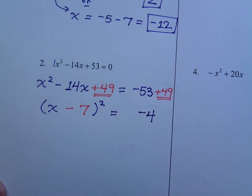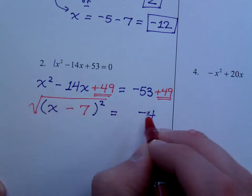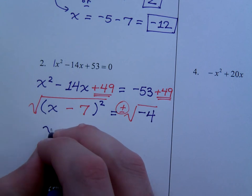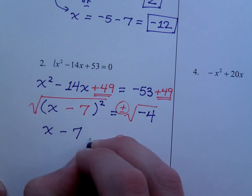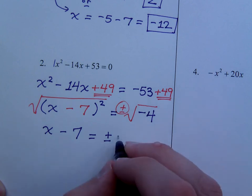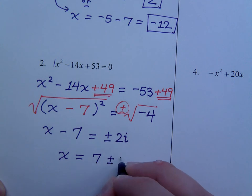Now, once you have this, it's just like the stuff we saw with the square root property. So, we take the square root of both sides, plus or minus. That means that x minus 7 is equal to plus or minus the square root of negative 4 is 2i. And then, we move the 7 over to completely get x by itself. So, that's a positive 7 plus or minus 2i.